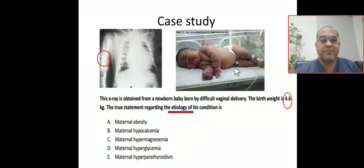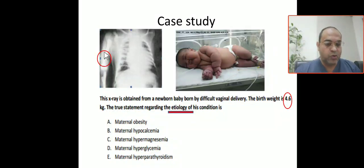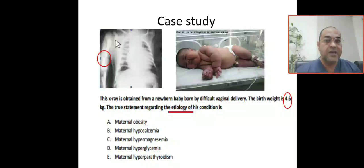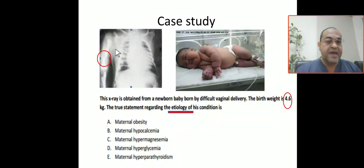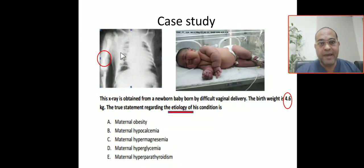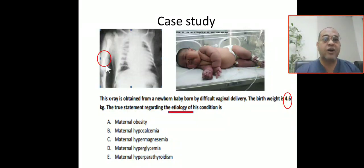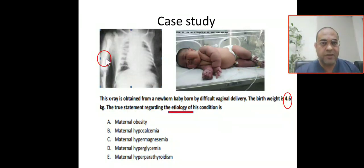He brought the X-ray for you. This is a baby who will be an infant of a diabetic mother. Because of the difficult delivery and large baby, this is birth trauma. The most common birth trauma is fractures — as we know, fracture of the clavicle. But since he gave you the whole limb, you have to concentrate and focus on the humerus, because this is also the most common complication. You can see here the humerus is fractured.